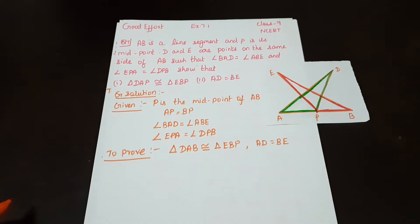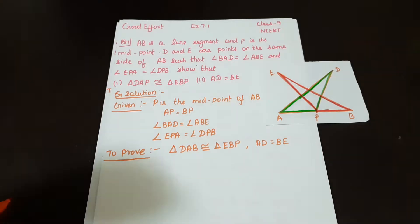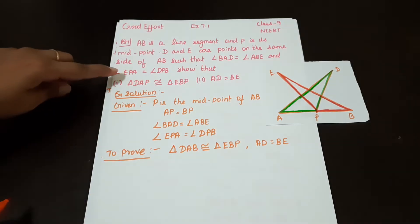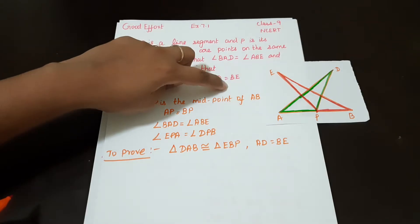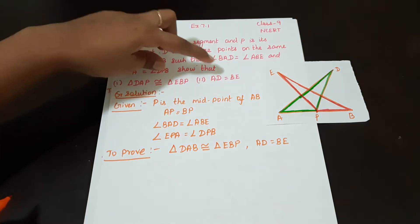AB is a line segment and P is its midpoint. D and E are points on the same side of AB such that angle BAD is equal to angle ABE and angle EPA is equal to angle DPB. Show that triangle DAP is congruent to triangle EBP, and AD is equal to BE. So now we have to prove this.